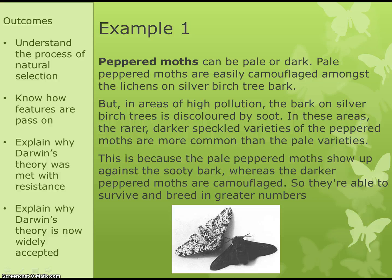A good example of natural selection to know is the peppered moth. Peppered moths come in two colours, as you can see from the picture. The pale ones are much more common normally and camouflage on silver birch tree bark. But if there is a lot of pollution, the silver birch trees become black in colour, meaning the pale moths stand out while the rarer black moths survive better because they are camouflaged on the dirty trees. In those places, the black moths become more common.